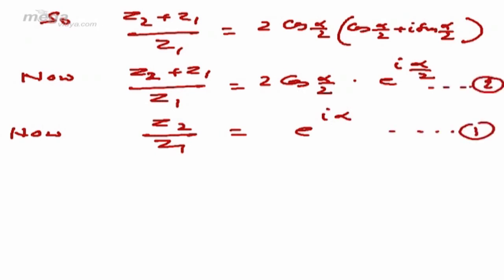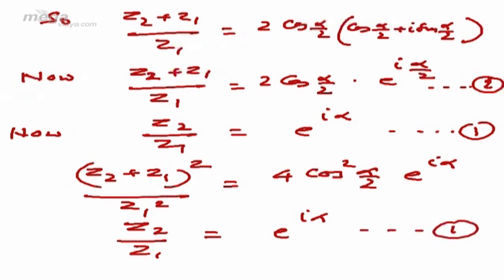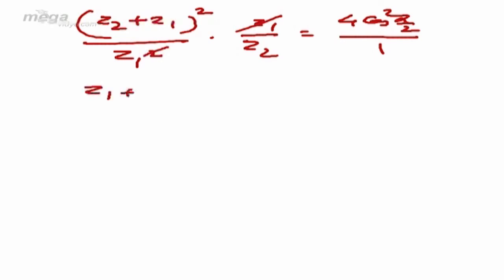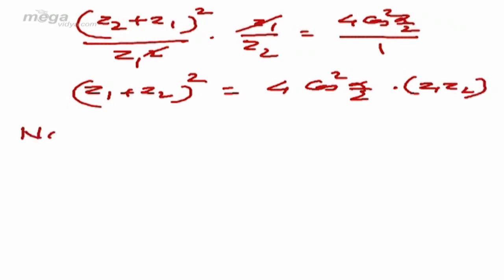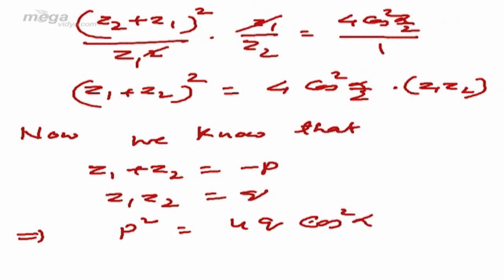Squaring equation 2: (Z1 + Z2)²/Z1² = 4cos²(α/2)·e^(iα). Dividing by equation 1 (Z2/Z1 = e^(iα)): (Z1 + Z2)²/(Z1·Z2) = 4cos²(α/2). Therefore (Z1 + Z2)² = 4cos²(α/2)·Z1·Z2. Substituting Z1 + Z2 = -P and Z1Z2 = Q, the equation becomes P² = 4Q·cos²(α/2).